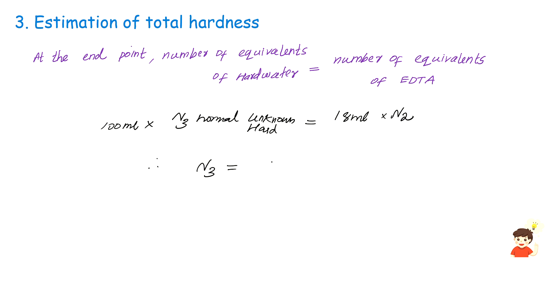N3 is equal to 18 times 0.24 divided by 100. We have normality of N3. Therefore, total hardness equal to 0.0432 times 50 times 10^3 mg per liter, which equals 2160 ppm or mg per liter.